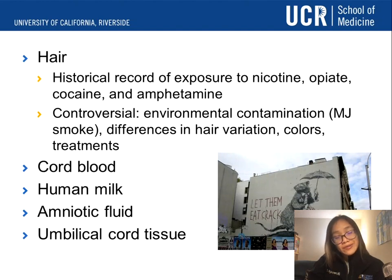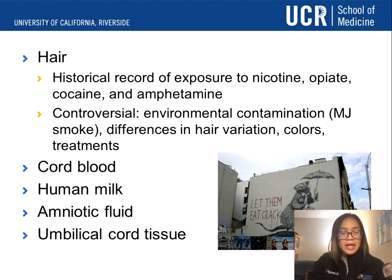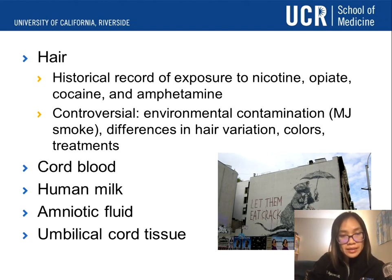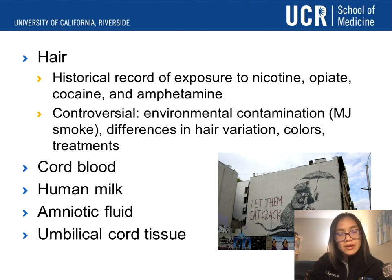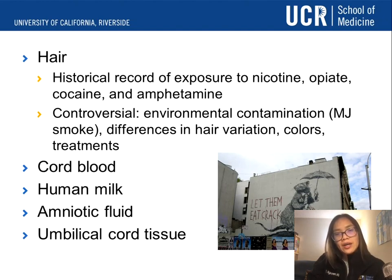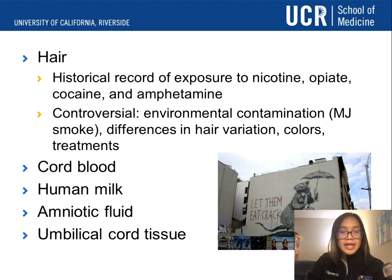Other things we can use to test include hair, which can have trace exposure to nicotine, opiates, cocaine, and amphetamines. Again, it's controversial because hair can be exposed to many other things in the environment, and there are differences in hair variation, color, and different treatments. We can also test cord blood, human milk, amniotic fluid, and umbilical cord tissue, but these are harder, more expensive, and rarer to test.